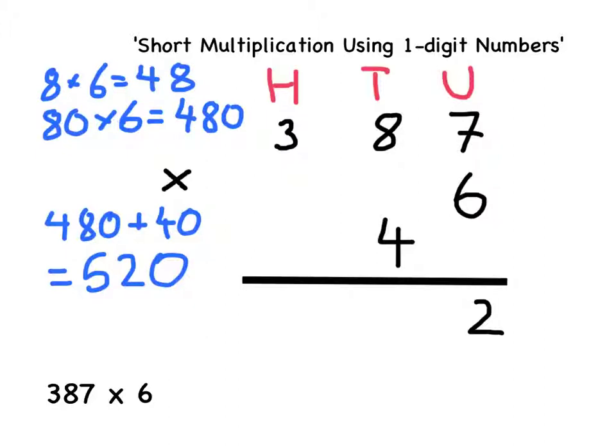To represent the fact that there are two tens or 20 as part of 520, I'm going to write a 2 in the tens column. To represent that there are 500s in this number, I'm going to write a 5 just here.